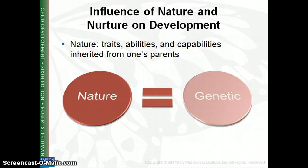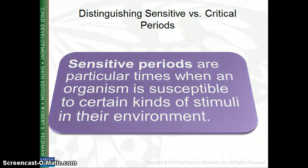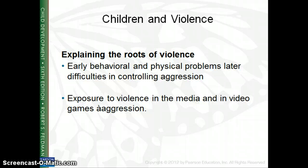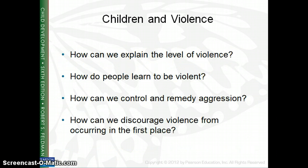To recap: nature is genetic and biology; nurture is the environment and what happens in our surroundings, including parenting, critical periods, and sensitive periods. When it comes to violence, there are different explanations for its roots. When you think about nature versus nurture, we consider whether a child is violent because there's violence in their genes — maybe their parents had violent tendencies — or whether exposure to video games and television contributes to violent behavior. Questions include: how do people learn to be violent, why are some people violent and others not, and how do we control or remedy aggression?